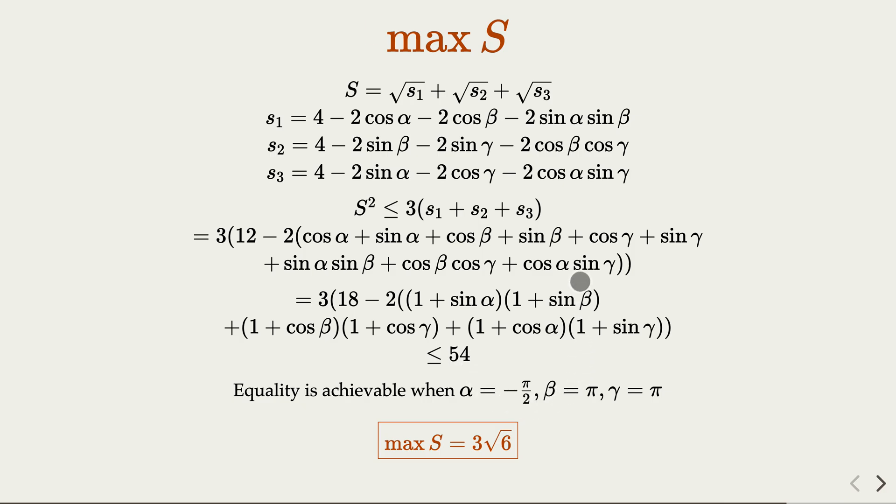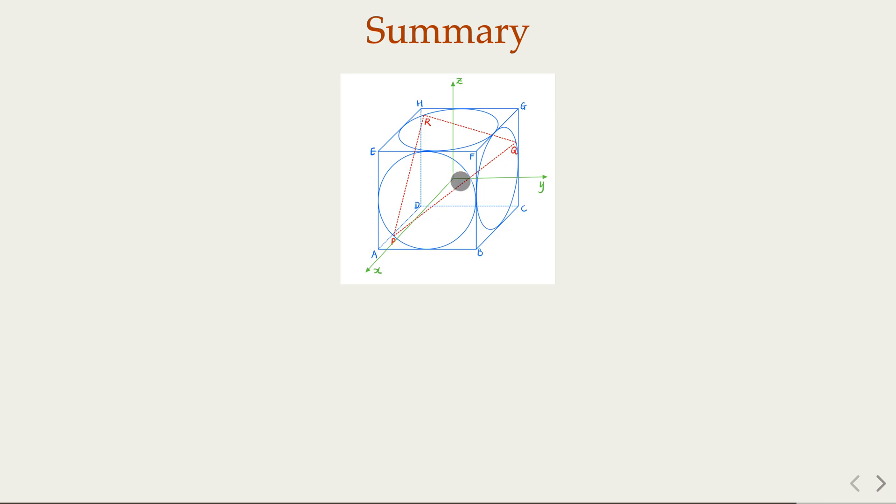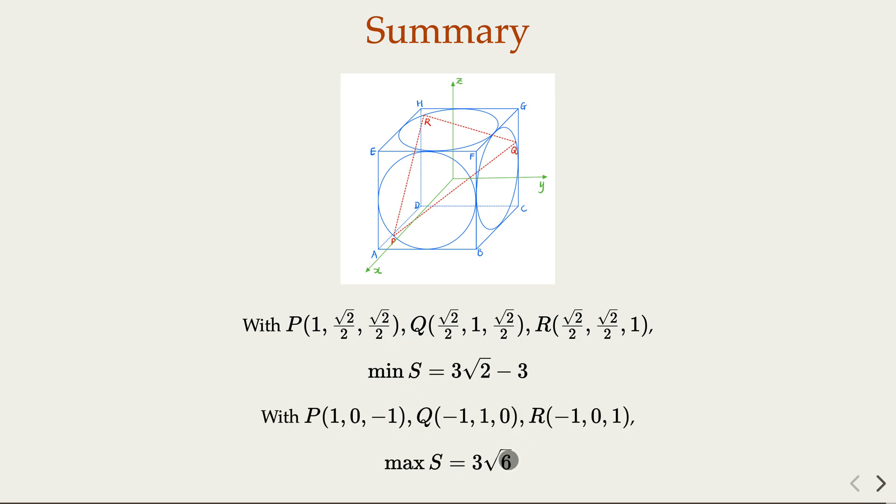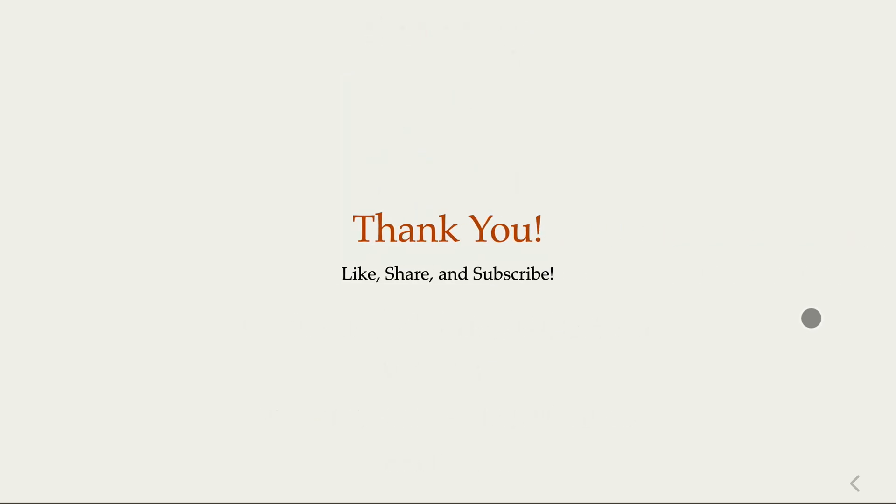So in summary this is what we get in the coordinate system as marked here. We did some analysis to calculate the perimeter of this triangle. And we did some analysis saying that the min is achievable with the value as this, when alpha beta gamma equal to pi over 4. And for the max it is achievable with those set up here. This is the min, this is the max. I think this is an interesting problem. Hope you like the video, please share and subscribe.